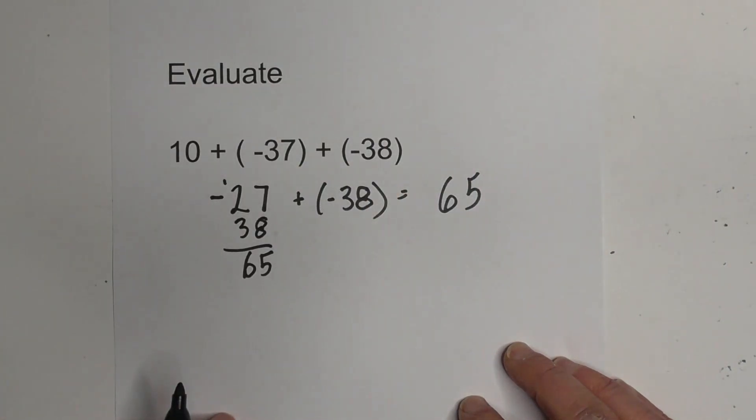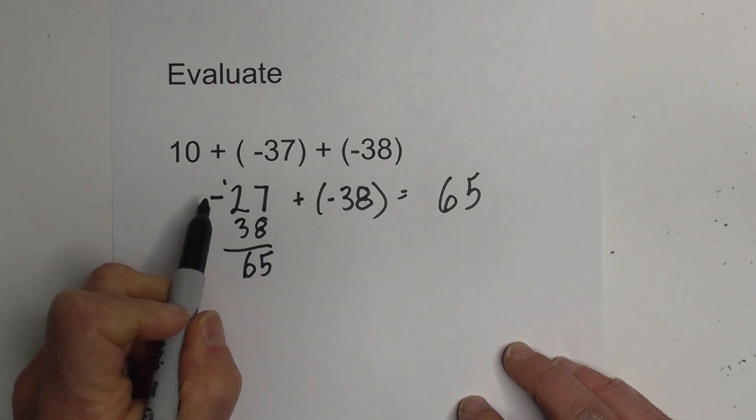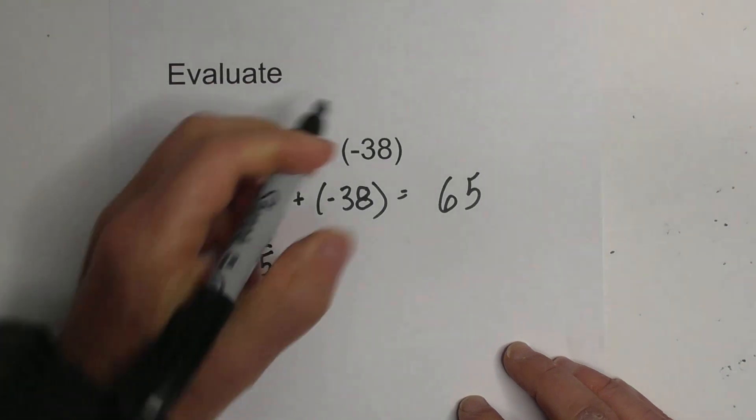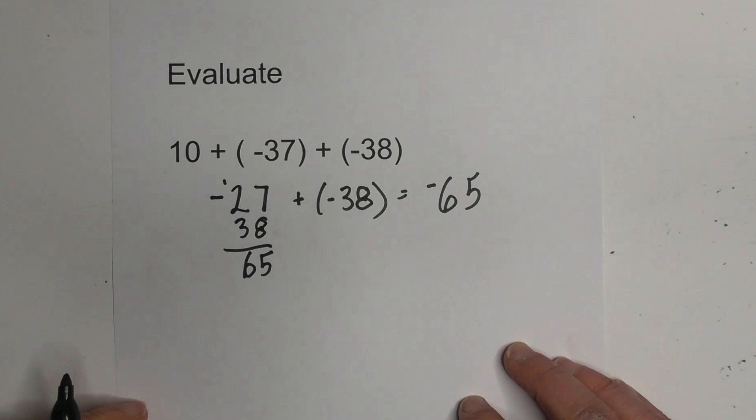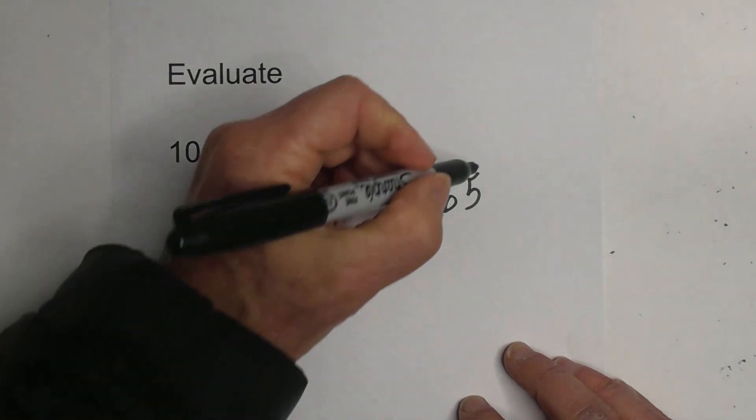Now, is it going to be positive or negative? Whenever you add and the signs are the same, you keep the sign. So this will become a negative 65.